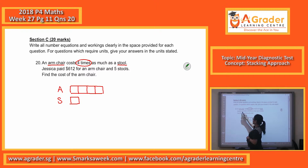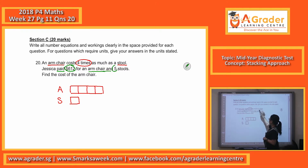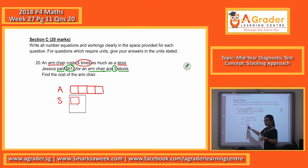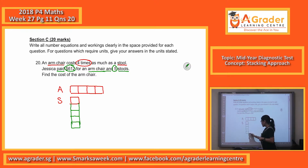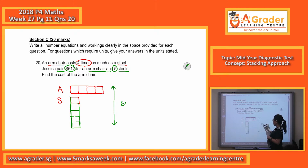In the next line, they said that Jessica paid $612 for one armchair and five stools. Here, I have only one stool. To get five stools, I can actually stack it downwards. So here I have five — this is for one armchair, and this is for five stools. So one armchair and five stools, she paid a total of $612.